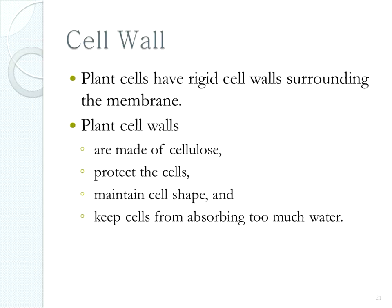Plant cells, in addition to the cell membrane, have a cell wall. It's made of cellulose, helps maintain the shape of the cell, and keeps cells from absorbing too much water.